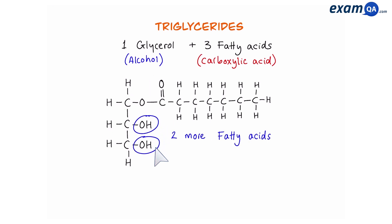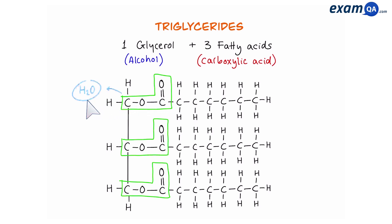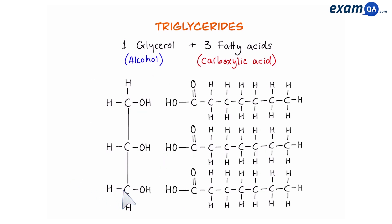Since there are two more OH groups, that means two more fatty acids can join, forming a triglyceride. We have three ester bonds, and this is also known as a triester. Whenever an ester bond forms due to condensation, a molecule of water is released. Since we've produced three ester bonds, that means we're going to release three molecules of water whenever we form one triglyceride. Water can be put back in, and this breaks the bond to give us one glycerol and three fatty acids. This is known as hydrolysis — splitting using water.